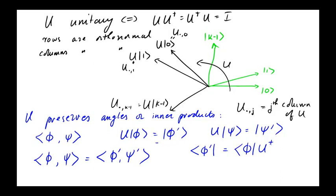So this is really saying that ⟨φ|U†U|ψ⟩ is the same as ⟨φ|ψ⟩, and of course the reason that's the case is U†U is the identity.